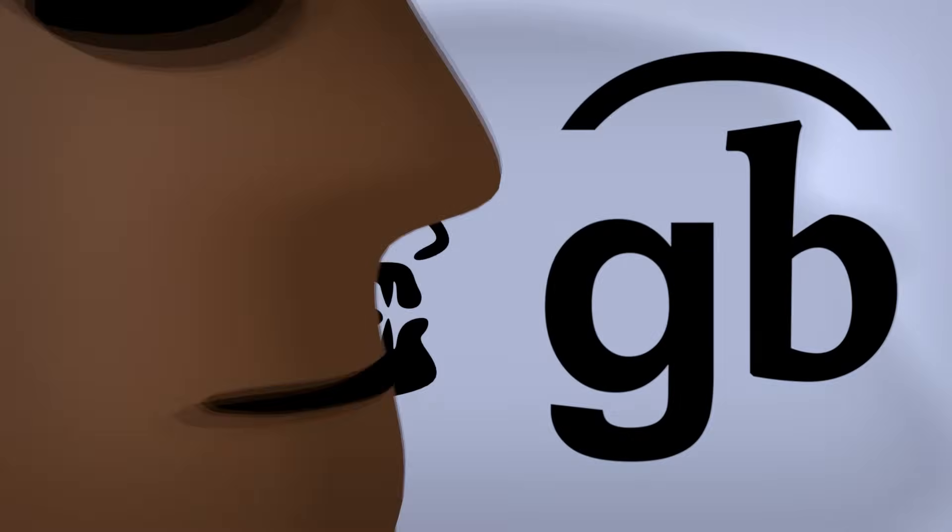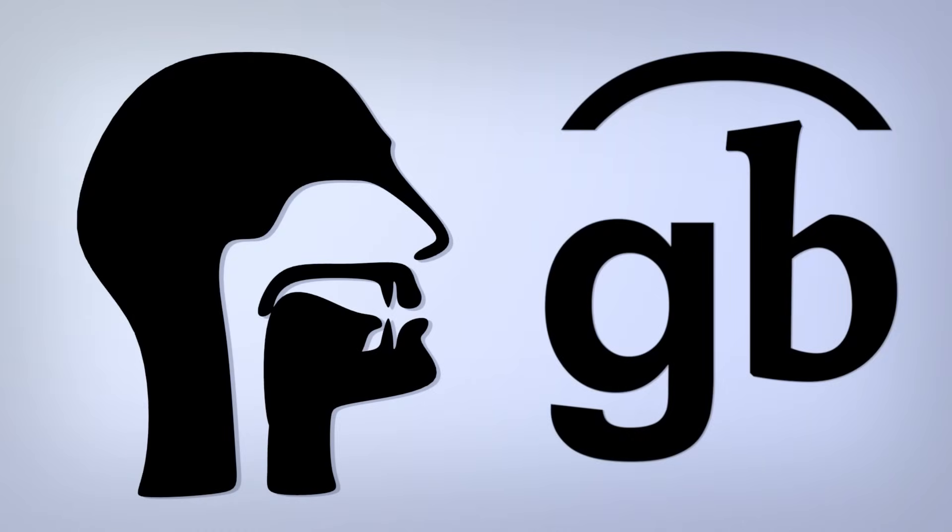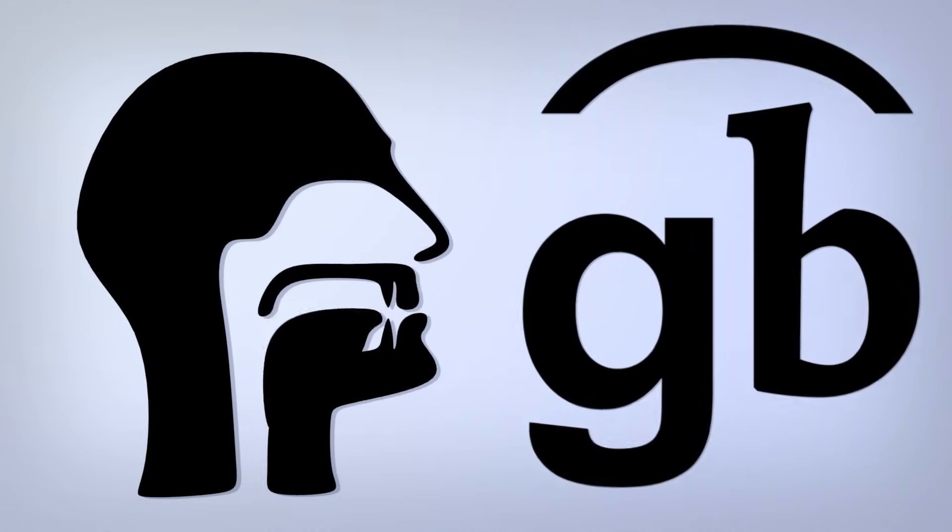To make it, bring your tongue up to the soft palate and make a G, but also close and release your lips during that G for a combo GB sound.